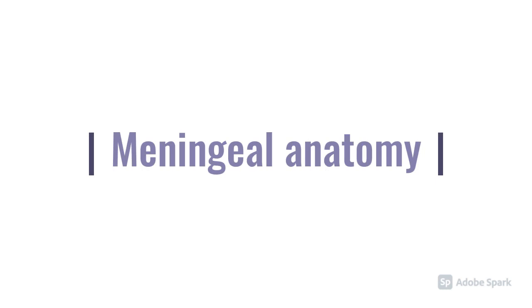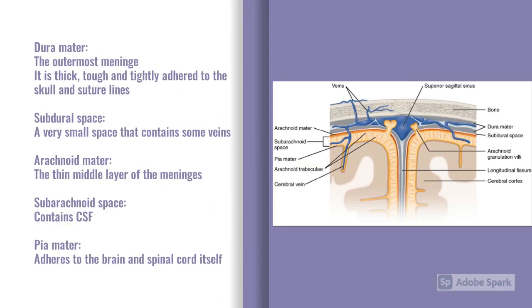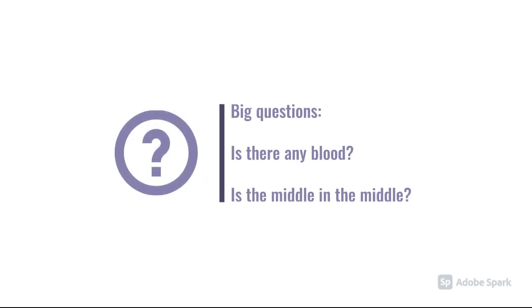Before we go on to talk about different types of hemorrhage, it might be useful just to refresh a little bit of neuroanatomy. The picture shows the meninges. We have the dura mater, which is the outermost layer — a very thick, tough meninges tightly adhered to the skull and the suture lines. Just below that is a very small subdural space where some veins perforate through. Then below is the arachnoid mater, the middle layer. Beneath that is the subarachnoid space, which contains CSF, helping cushion the brain. Finally, below that is the extremely thin pia mater, which adheres to the surface of the brain. The two big questions as a generalist are: is there any blood, and is the middle in the middle?